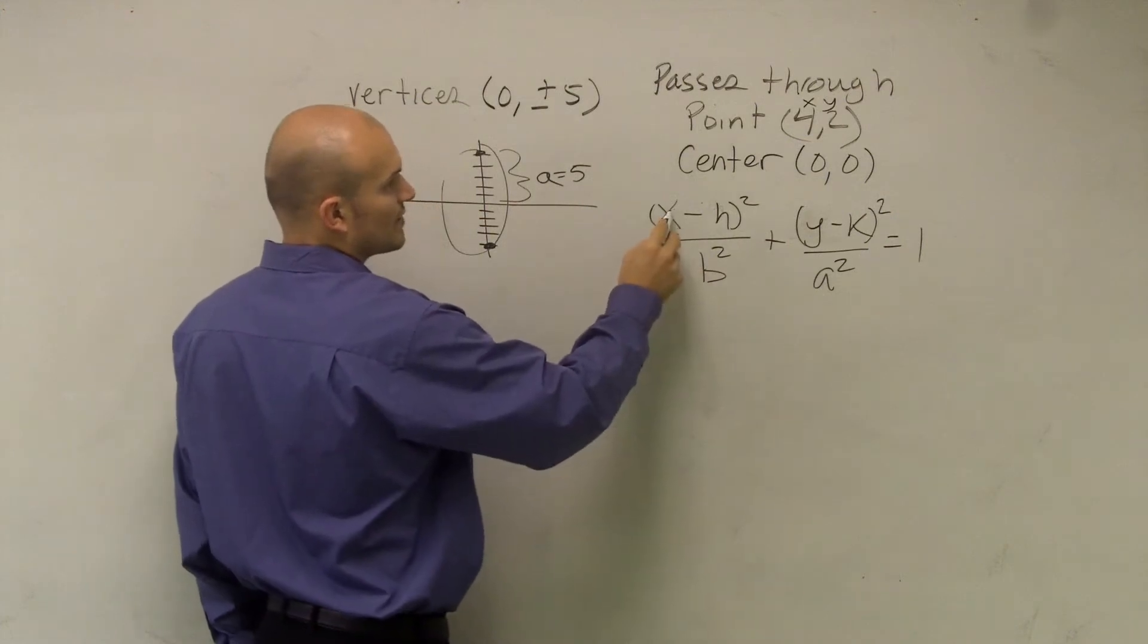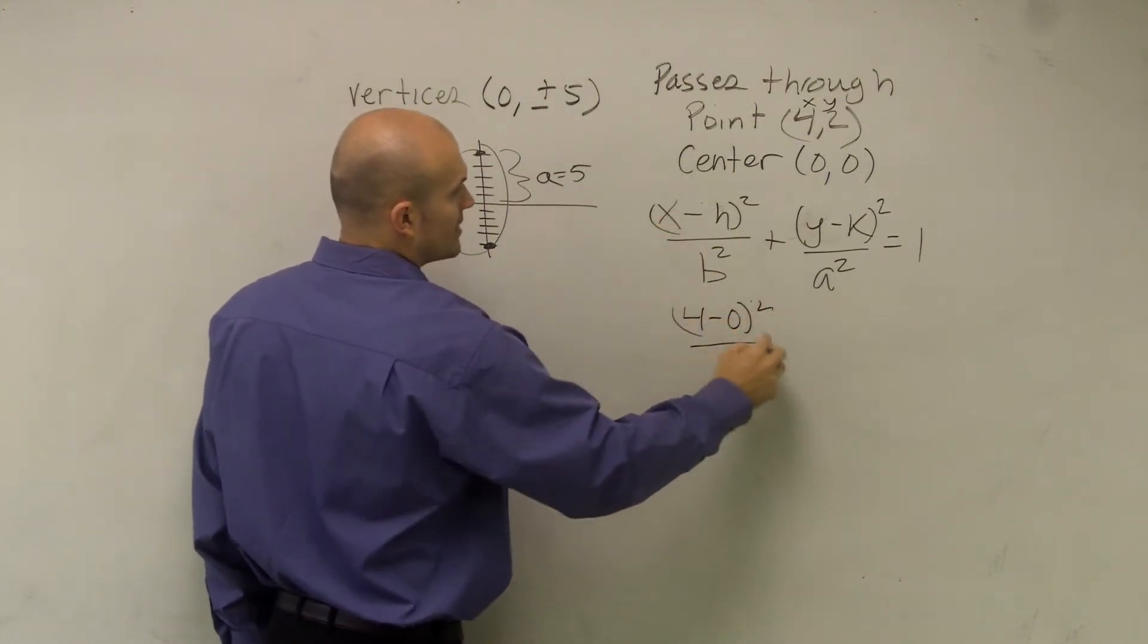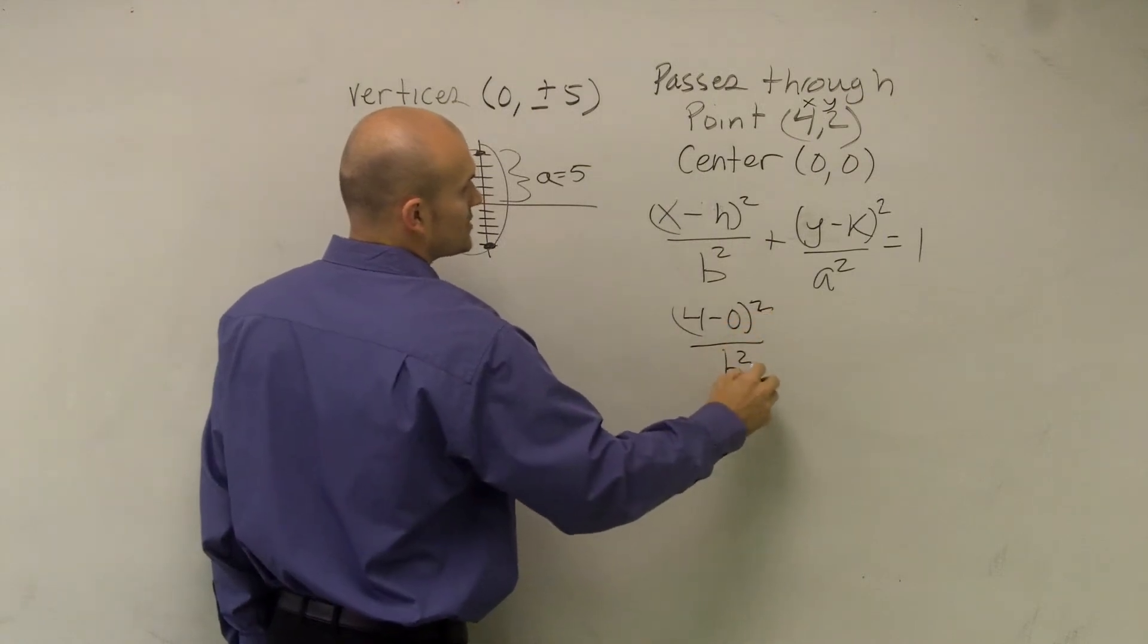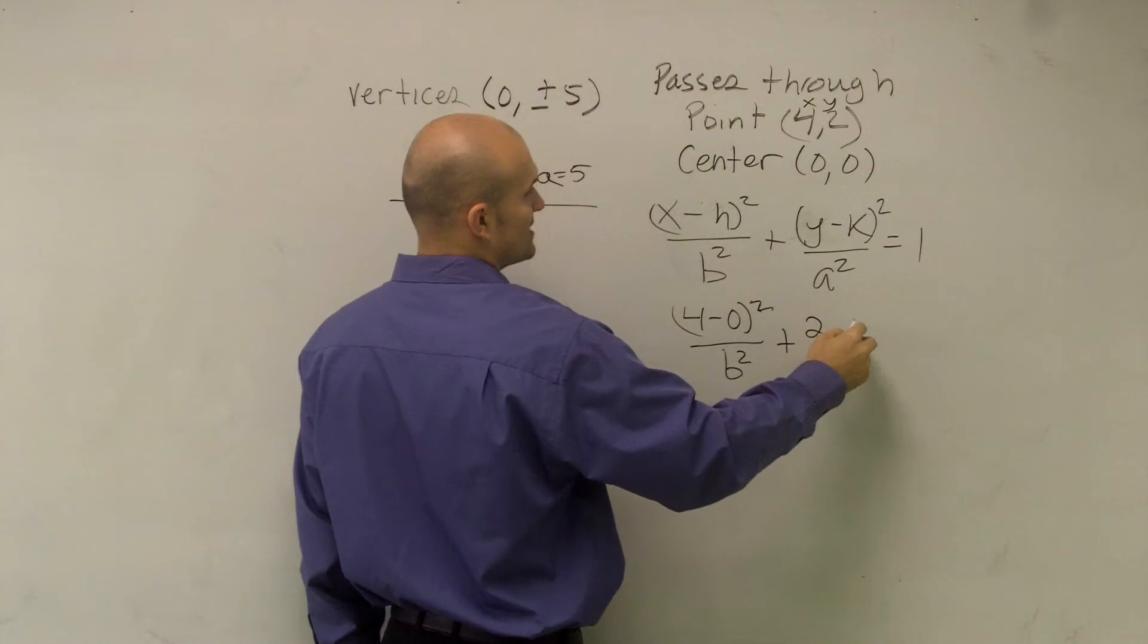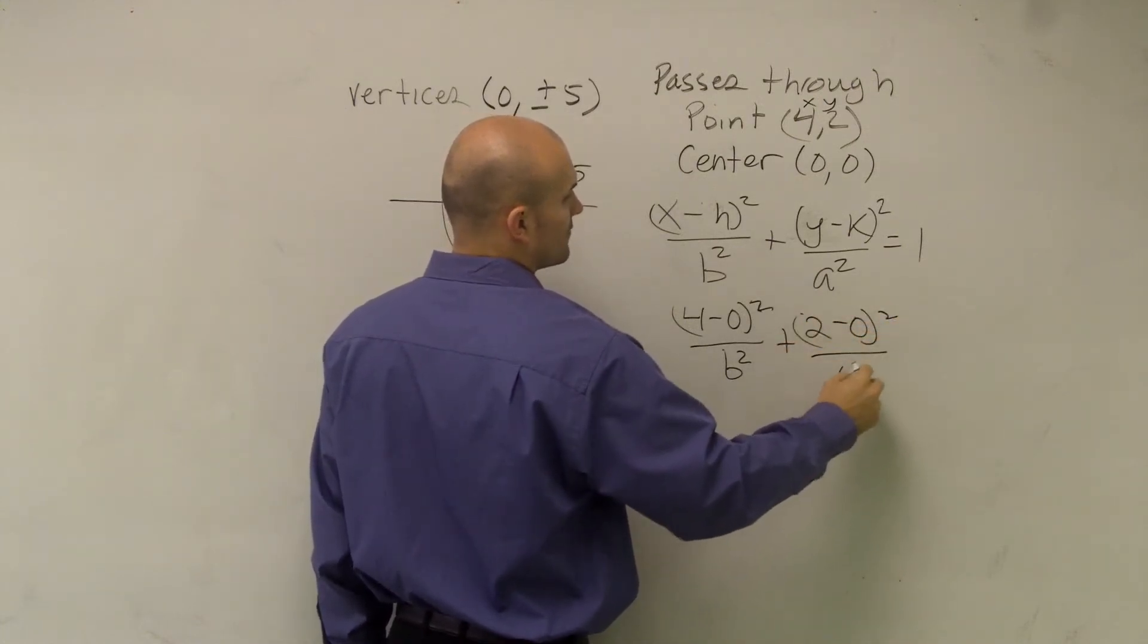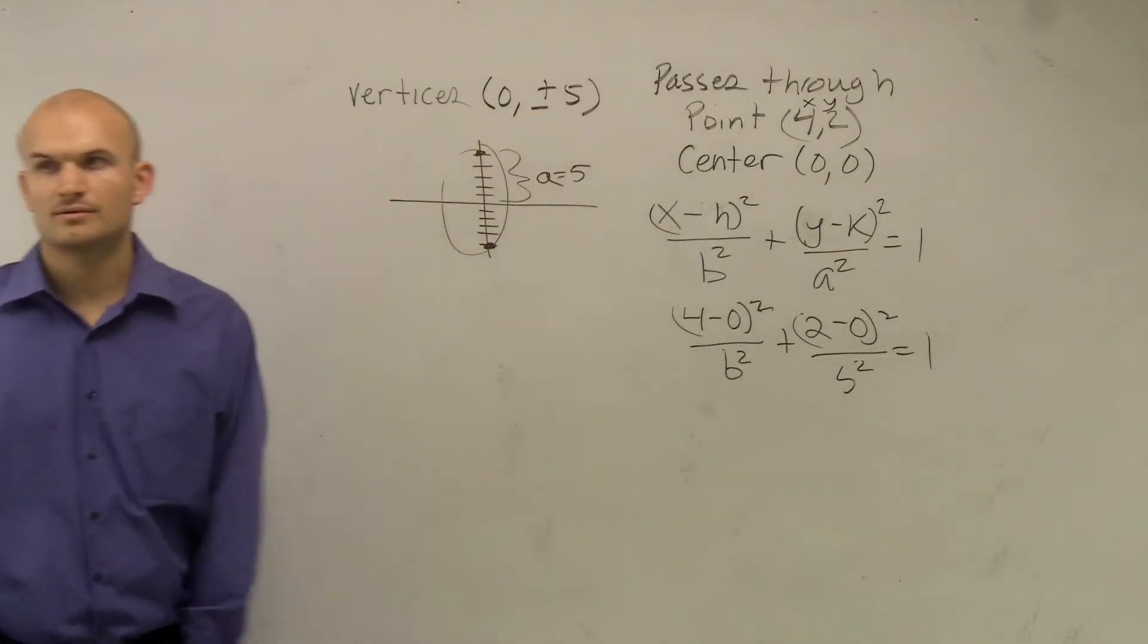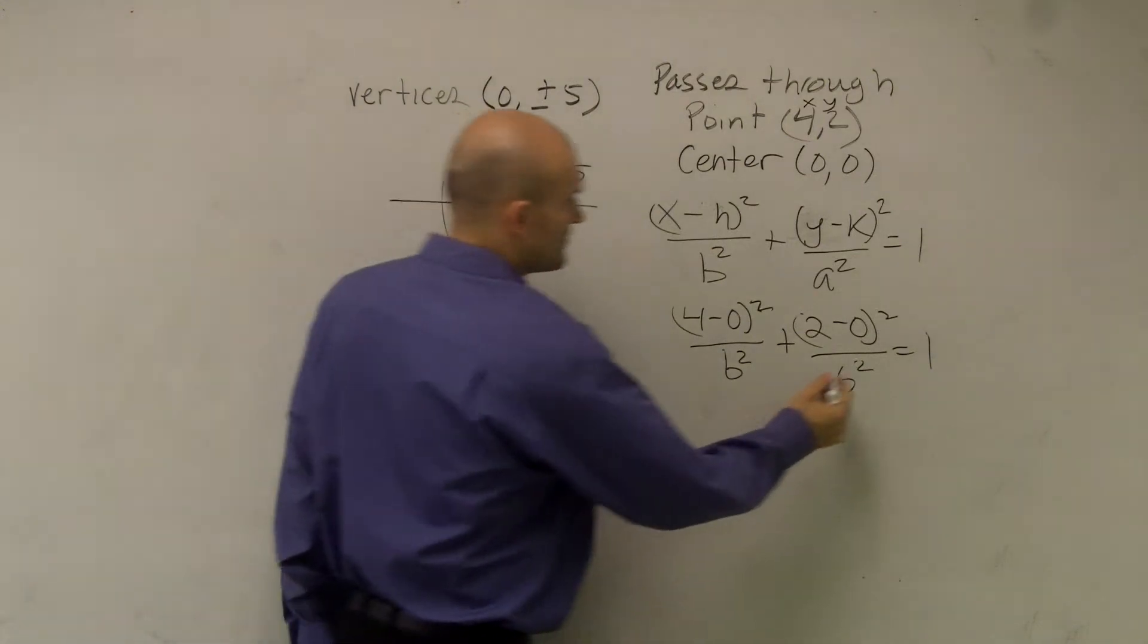I'm just going to plug in all these numbers. So I can write (4 - 0)²/B² + (2 - 0)²/5² = 1. See what I did? I just plugged everything in, and now I'm going to simplify it.